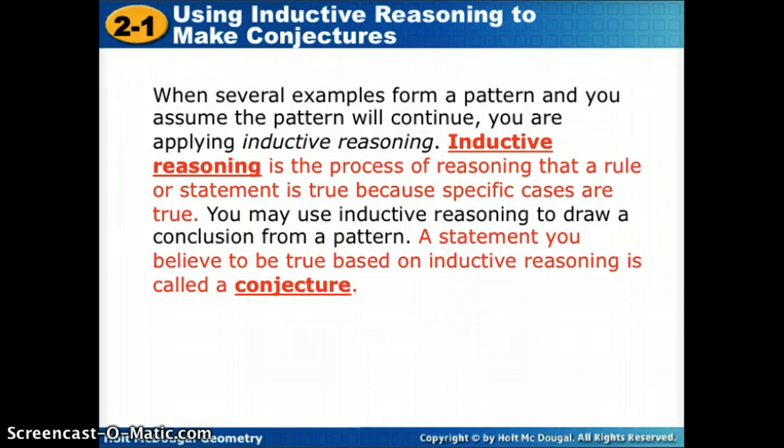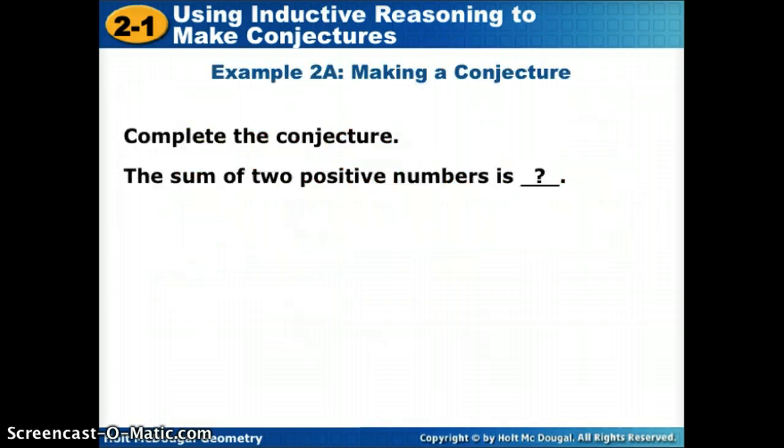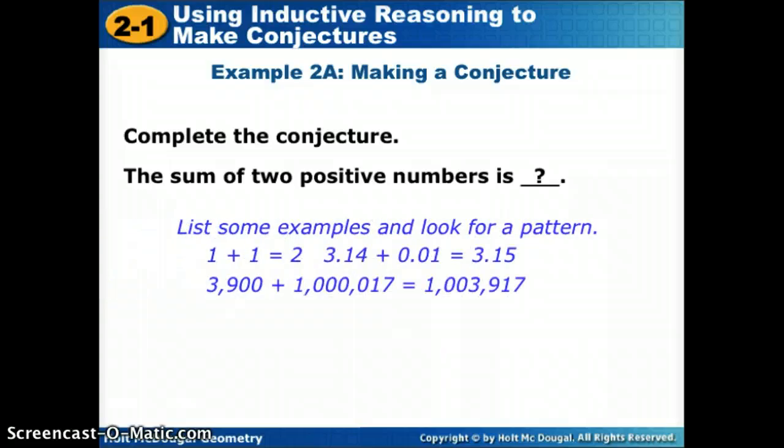So let's try a couple more. To complete a conjecture, we're trying to guess what I'm completing, a statement that I believe to be true. So if we wanted to say the sum of two positive numbers is... let's look at a couple examples. Let's look for a pattern. So if we want to come up with a couple examples of two positive numbers that we add together, well if I just picked 1 and 1, those are two positive numbers, I come up with 2. Okay, let's look for two. We used two easy whole numbers. What if we added decimals? 3.14 is a positive number, and so is 0.01, and I get 3.15. What if I add really big positive numbers? Now we're trying to think, what do these three things have in common?